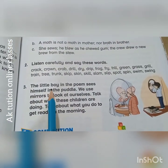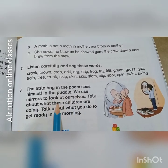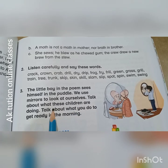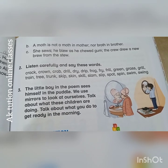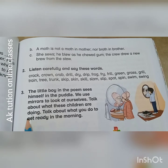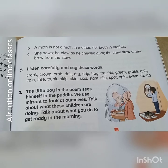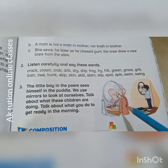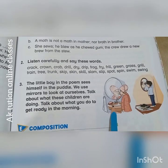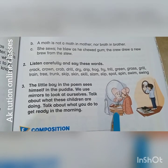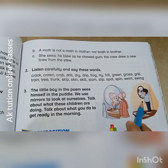There is a small activity here. The little boy in the picture sees himself in the puddle. We use a mirror to look at ourselves. Talk about what these children are doing. Talk about what you do to get ready in the morning. The picture will explain what to do and you will describe your routine. For example: The boy is brushing his teeth. The boy is combing his hair.